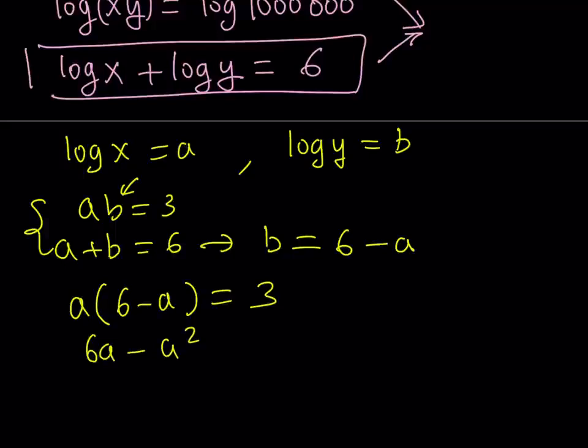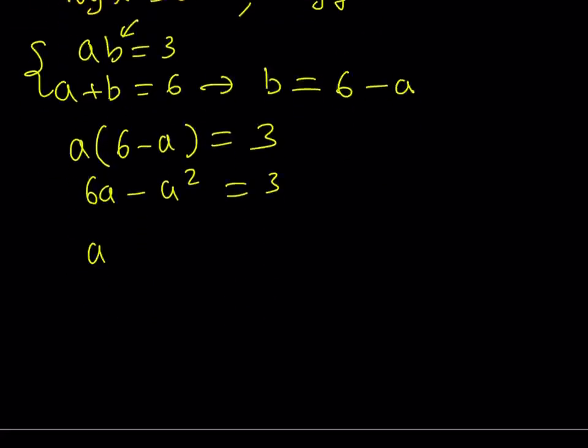From here, I get 6a minus a squared is equal to 3, and a squared minus 6a plus 3 is equal to 0. Great. So now, I got a quadratic equation, and I should be able to solve it.